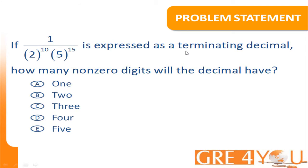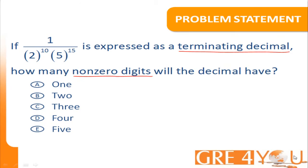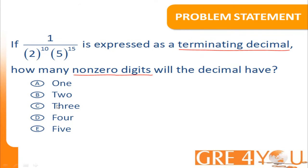There are a couple of key terms that we have to take a look at. One of them is terminating decimal, and the other is non-zero digits. I'm going to solve the problem in a couple of different ways. The first method is a rather longer method, but the second method will be a little shorter than that. But before we go ahead and jump into the problem, let's take a look at the term terminating decimal.